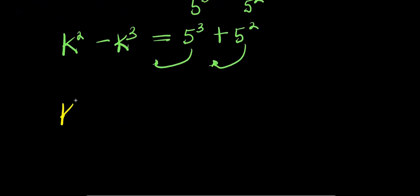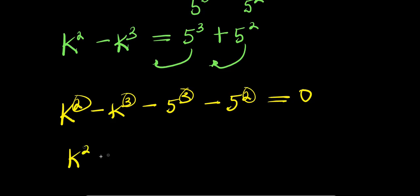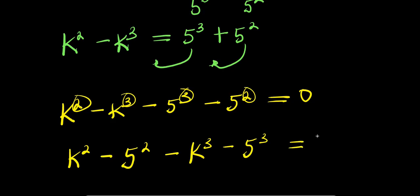Bringing everything to one side, we have k squared minus k cubed minus 5 cubed minus 5 squared equals zero. Rearranging, we get k squared minus 5 squared minus k cubed minus 5 cubed equals zero.